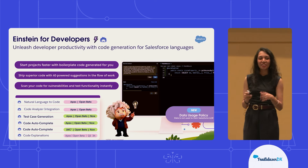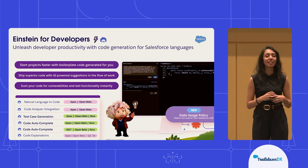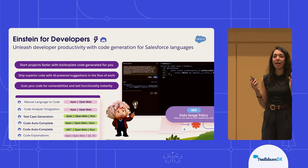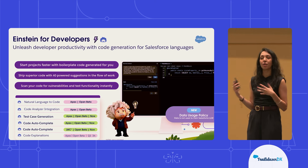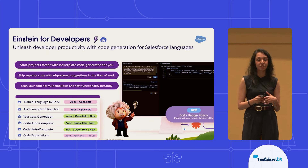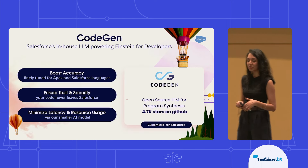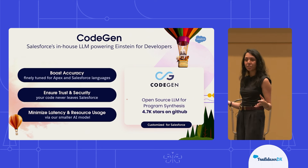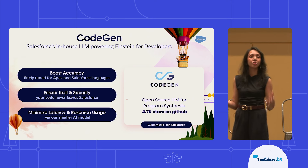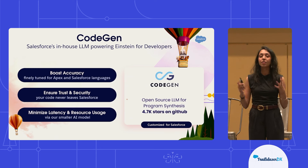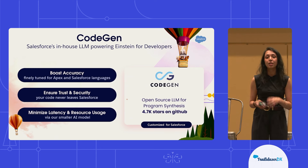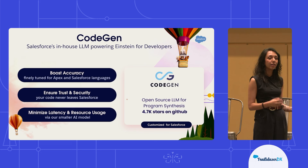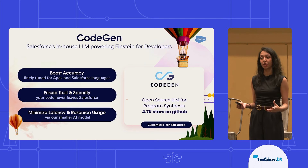Another exciting update is to our data usage policy — we are not using any customer data to train our internal models here at Salesforce. What's happening behind the scenes? I've been mentioning that we're using generative AI. The model that we're actually working with was built by our very own in-house AI research team, and it's called CodeGen.